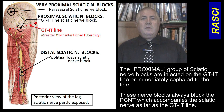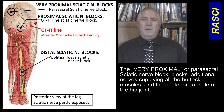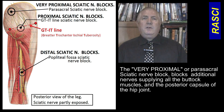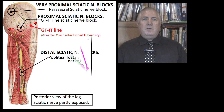The proximal group blocks the posterior cutaneous nerve of the thigh together with the sciatic nerve. The final group is the very proximal sciatic nerve blocks, described by Man-Sue and also known as the parasacral sciatic nerve block. In addition, it blocks the superior and inferior gluteal nerves supplying all of the buttock muscles as well as the skin nerves to the buttock.